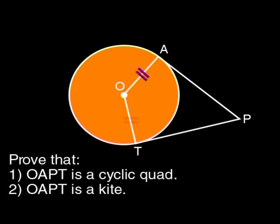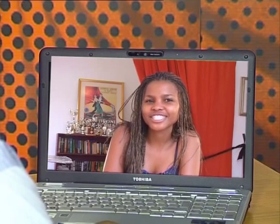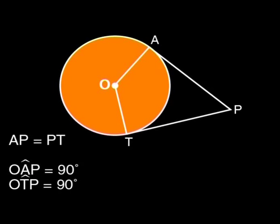OA equals OT because they are equal radii of the circle. Yes. OA equals OT. What about the theorem we have just proved? Can we remember it? Tangents to the same point outside the circle are equal. Very good. From that theorem we can say that AP equals TP as they are tangents to the same point P outside the circle.